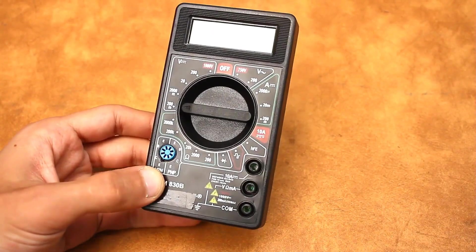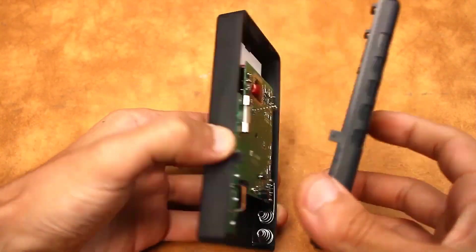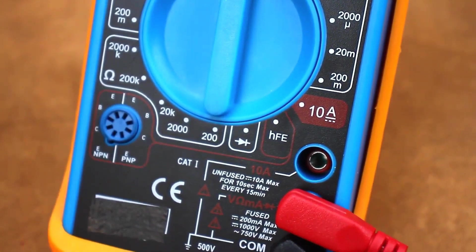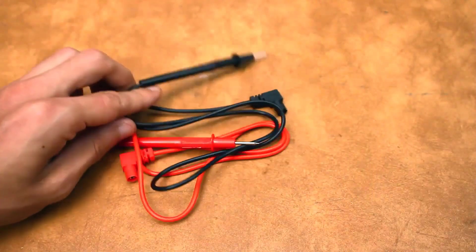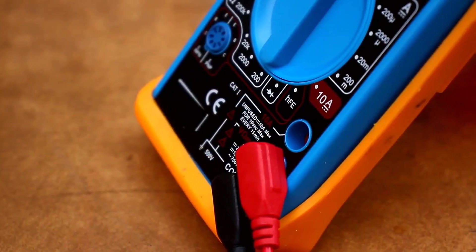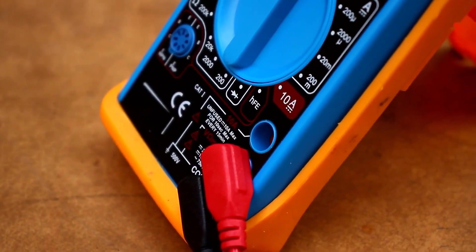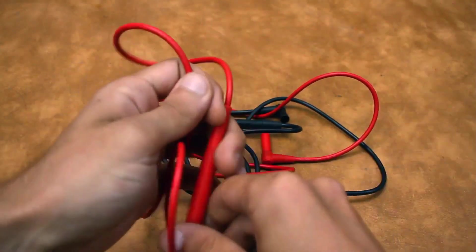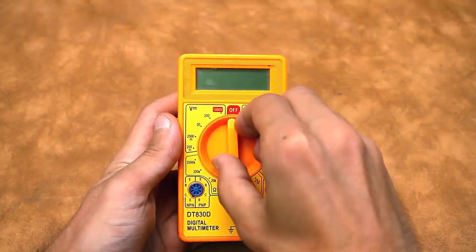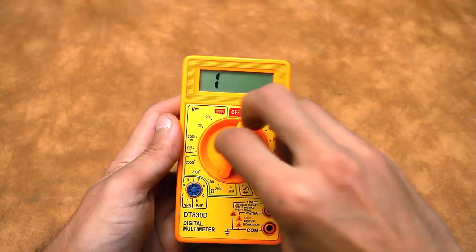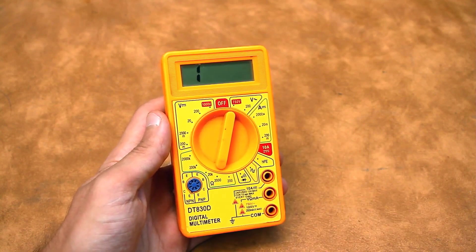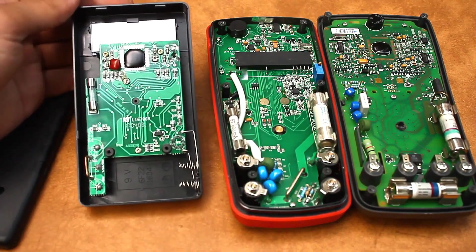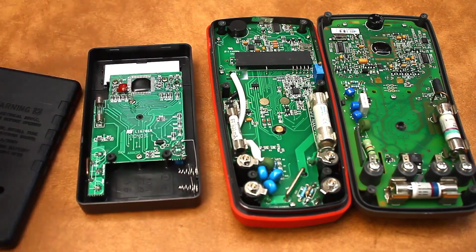I would add to everything said that the most important factor when choosing a multimeter is the protection of the device itself. Unfortunately, many do not pay proper attention to this. The wires, cases, and internals of cheap multimeters do not provide a sufficient level of protection, not only for the multimeter's electronic circuit but also for you, the owner. For example, if you accidentally set the resistance measurement mode and plug the multimeter into the network, a cheap multimeter might fail. In some cases, the multimeter might even catch fire. This won't happen with expensive multimeters.